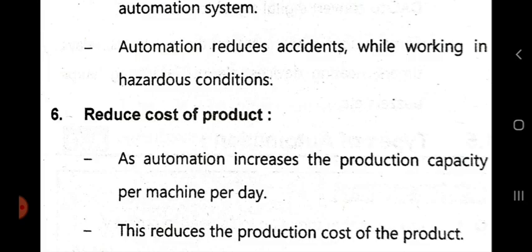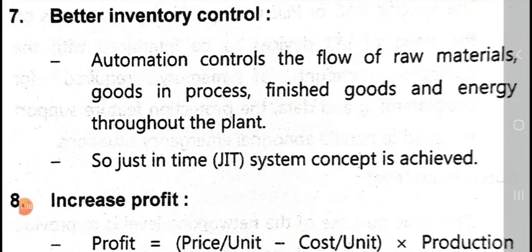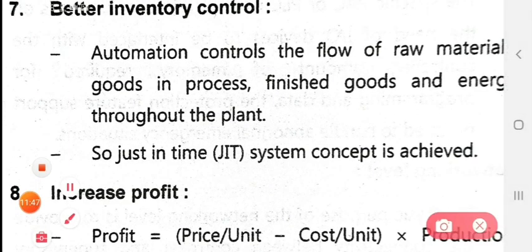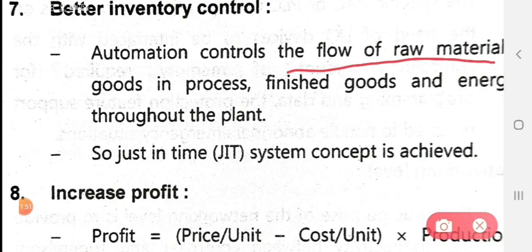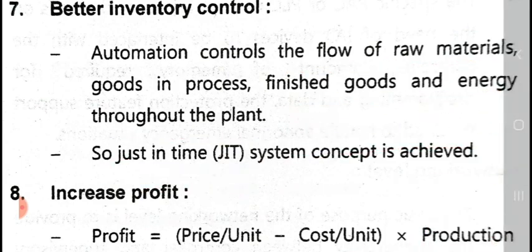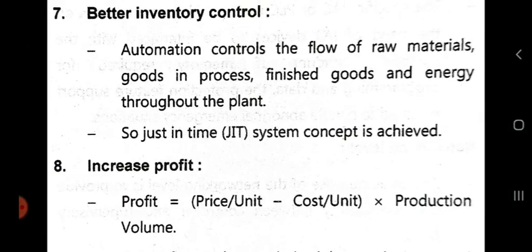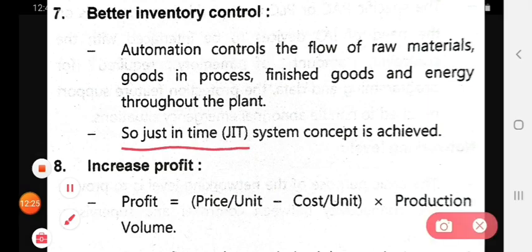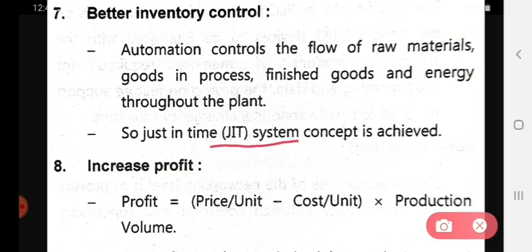Seventh, it enables better inventory control. Automation controls the flow of raw materials, goods in process, finished goods, and energy throughout the plant. As a result, the just-in-time system concept is achieved, meaning production and delivery happen on time.